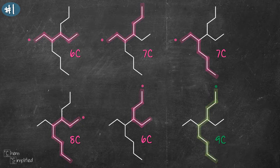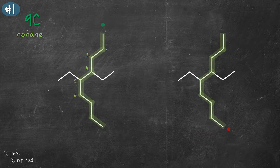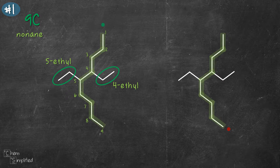Now that we've found our longest chain, let's number the carbons. When numbering, we always start from the end, and every chain has two ends — in our case, one on the top and one at the bottom. Numbering from the top gives us two substituents: one at carbon 4 and the other at carbon 5. Since these two substituents each contain two carbons, they are called ethyl groups, giving us 4-ethyl and 5-ethyl. Numbering from the bottom gives us substituents at carbon 5 and carbon 6 — so 5-ethyl and 6-ethyl.